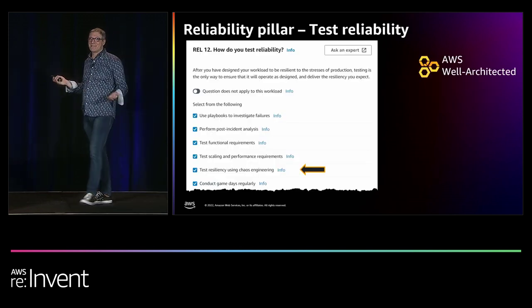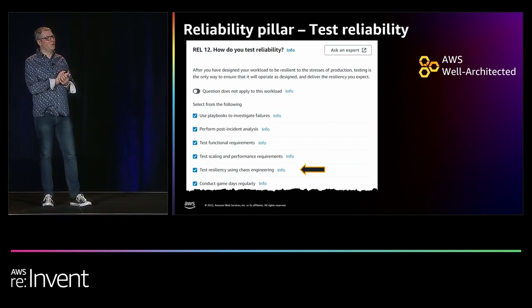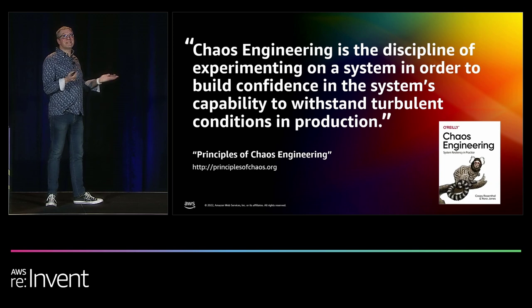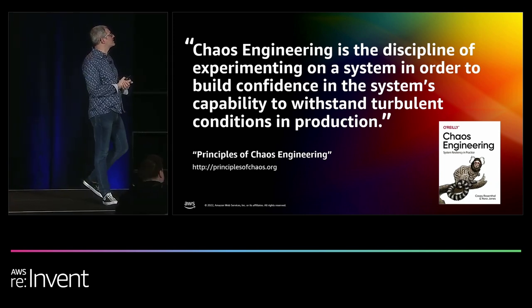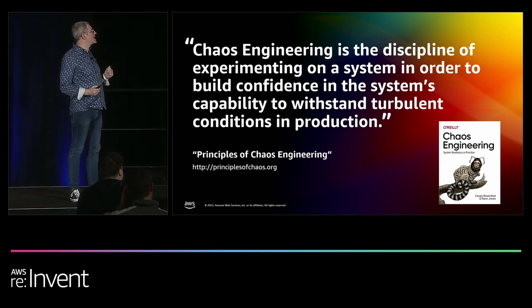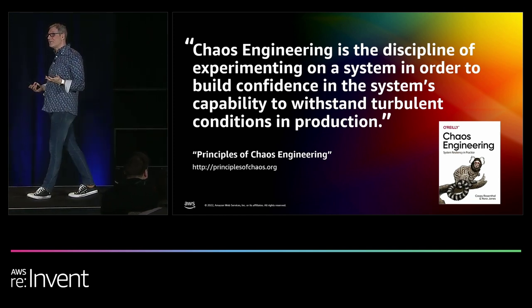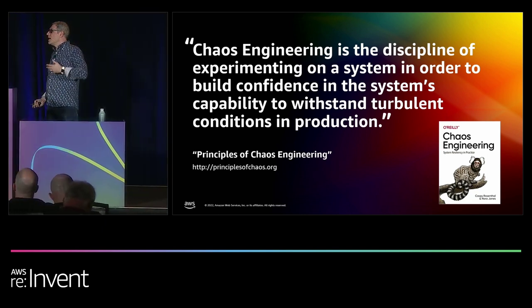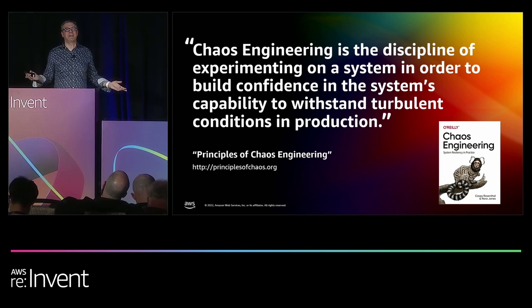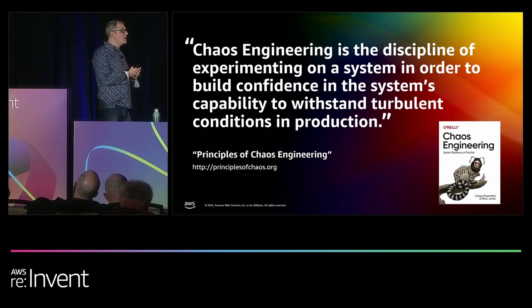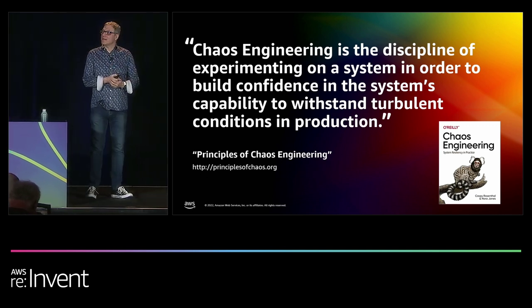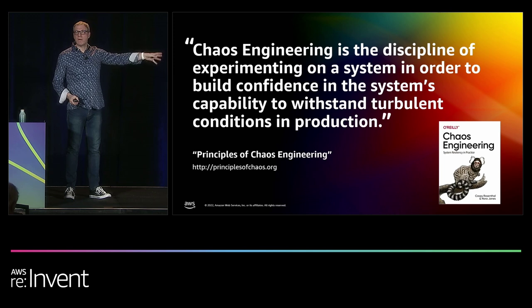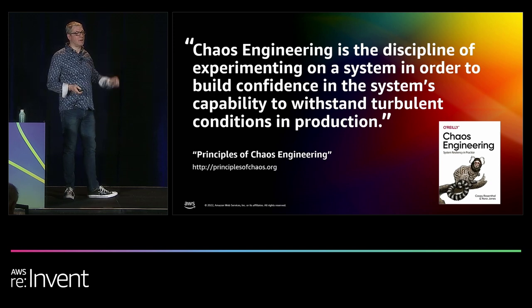The best practice: use chaos engineering to test your workload resilience. Chaos engineering is the discipline of experimenting on a system to build confidence in its capability to withstand turbulent conditions in production — unusual user activity, network issues, infrastructure issues, bad deployments. The key thing to know about chaos engineering: it's not about creating chaos. It's about acknowledging the chaos that already exists, preparing for it, mitigating it, and avoiding its impact.